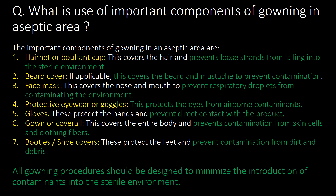What is the use of the important components of gowning in aseptic areas? First, hairnet or cap: this covers the hair and prevents loose strands from falling into the sterile environment. Second, beard cover: these are used to cover beard and mustache to prevent contamination. Third, face mask: these are used to prevent respiratory droplets from contaminating the environment.